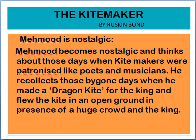When Mahmood makes the kite for Ali, he becomes nostalgic. He remembers the good old days when he used to make kites, and how he was patronized by the Nawab. He talks about the dragon kite which was made by him on the special demand of the Nawab. The description of the dragon kite is given in great detail — how it soars high in the sky. He flew the kite in an open ground in the presence of a huge crowd and the Nawab.